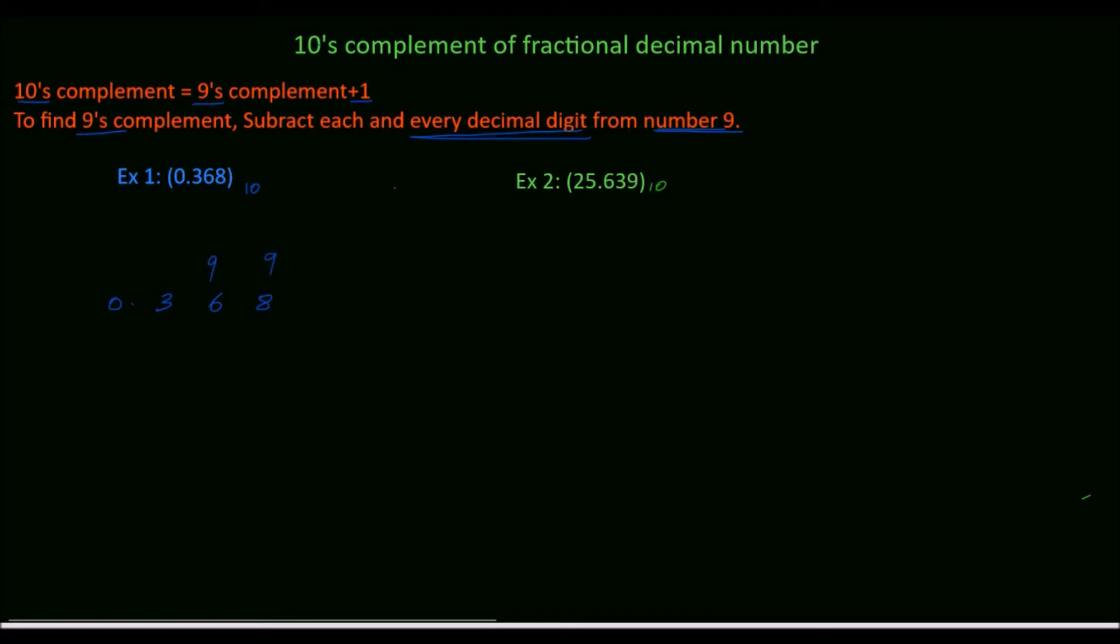Subtract the digits from 9. Subtract this. 9 minus 8, 1. 9 minus 6, 3. 9 minus 3, 6. 0.631 is the 9's complement. We have to find 10's complement.